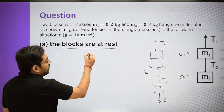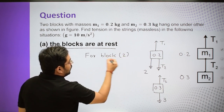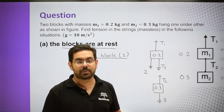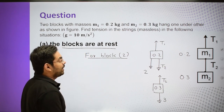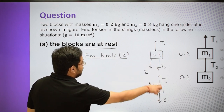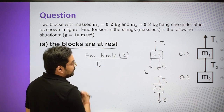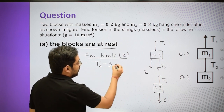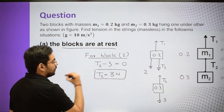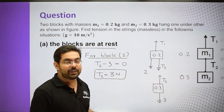For block 2, there are no forces in the x direction, so we write only in the y direction. Net force = 0, so T2 - 3 = 0, giving T2 = 3 Newton. So the string between M1 and M2 has a tension of 3 Newton.